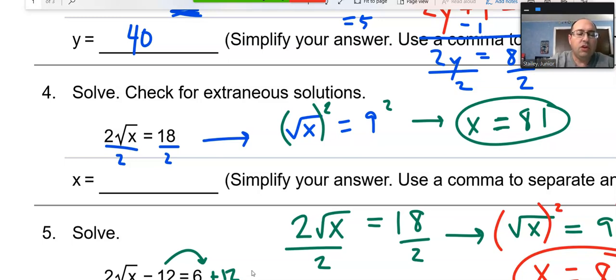So dividing by 2 on both sides gets rid of, gets the radical by itself. We wanted to get that radical by itself. Once we did that, we squared both sides and got 81. So, pretty straightforward question here.